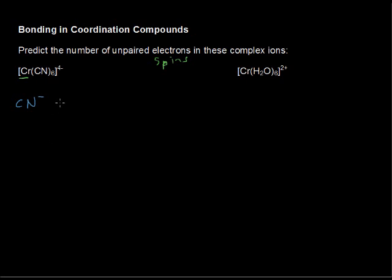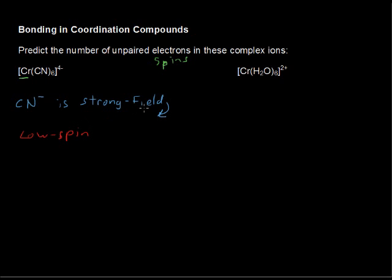The cyanide ion is what we call a strong field ligand. That results in a low spin complex. So if you have a strong field ligand you get a low spin complex. If you have a weak field ligand you get a high spin complex, and that'll be the next example. So low spin complex.